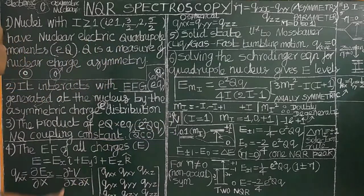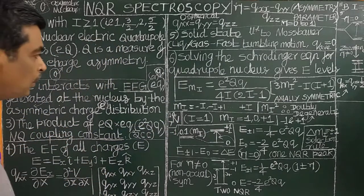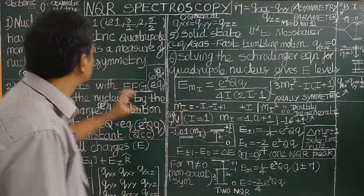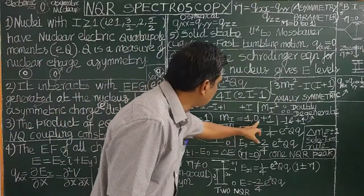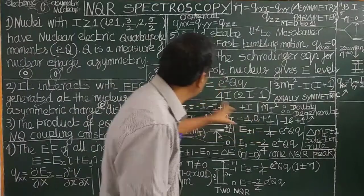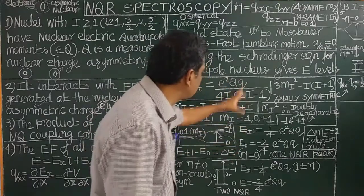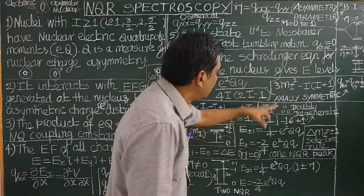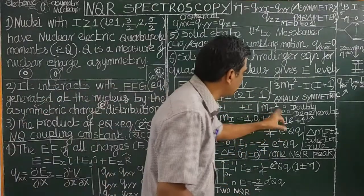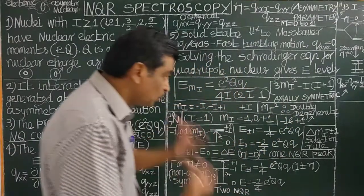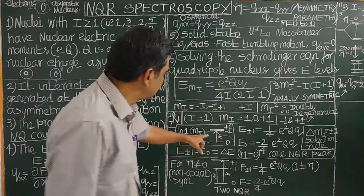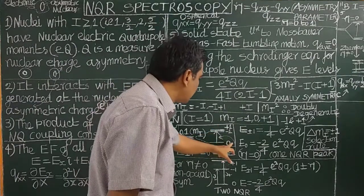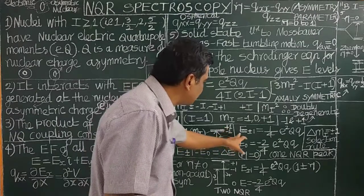For example, consider nitrogen-14, which has I = 1. Since I ≥ 1 it possesses a nuclear quadrupole moment. The mI values are −1, 0, and +1. Substituting these into the energy expression gives three energy values. Since mI² is the same for mI = −1 and mI = +1, those two levels have the same energy and are doubly degenerate. Due to quadrupole splitting, the ground state mI = 0 is singly degenerate while the excited state E(±1) is doubly degenerate.